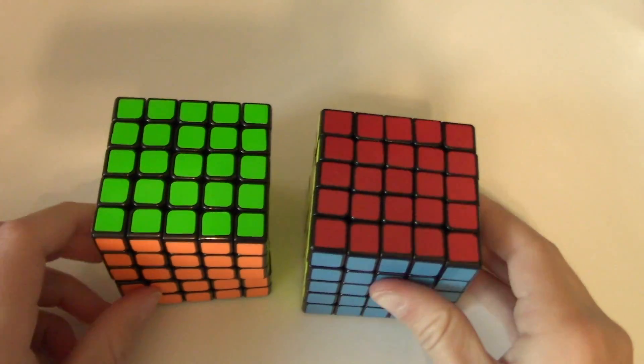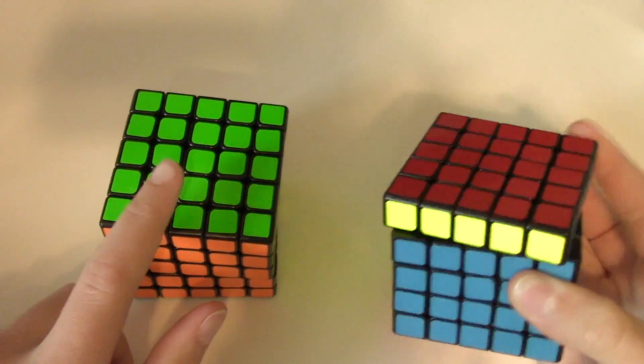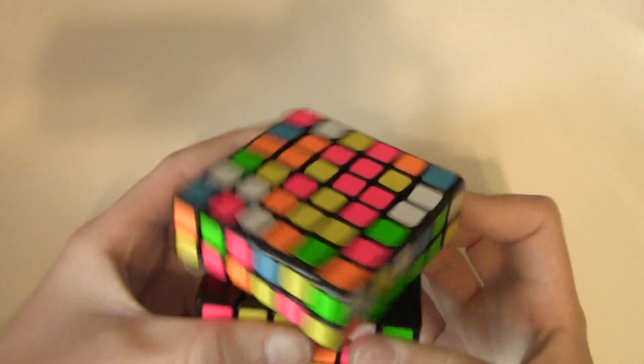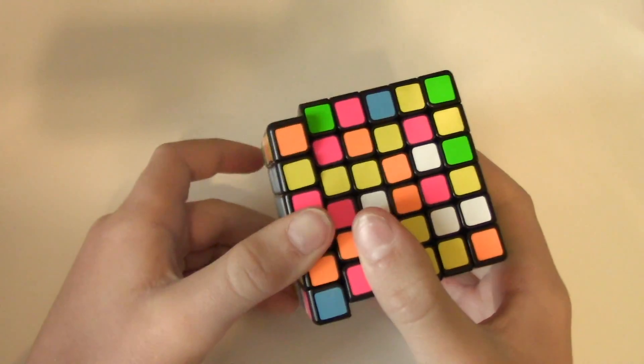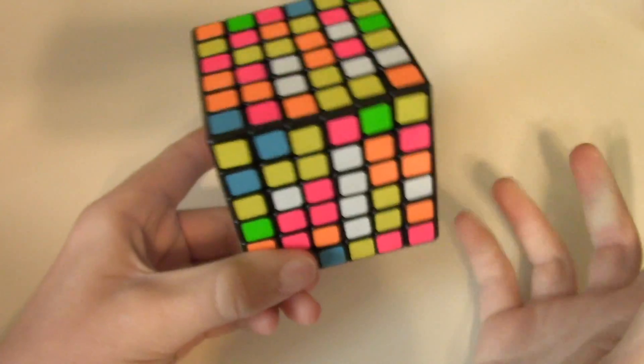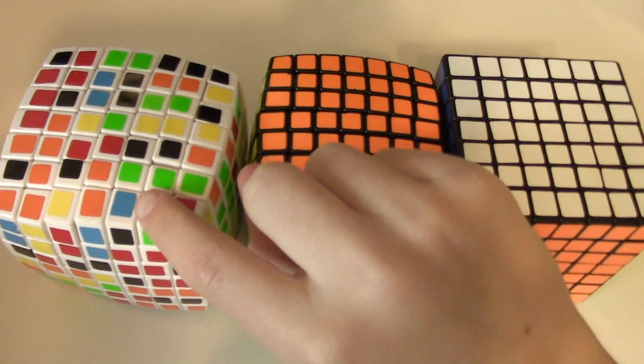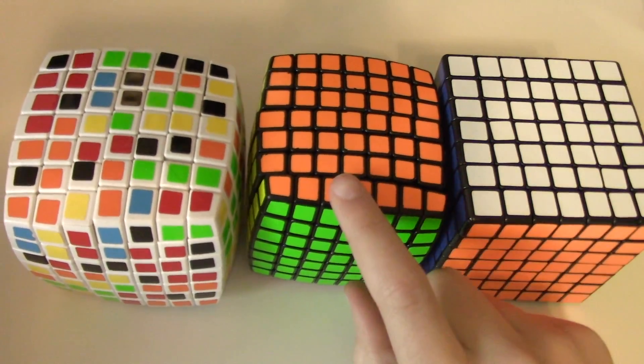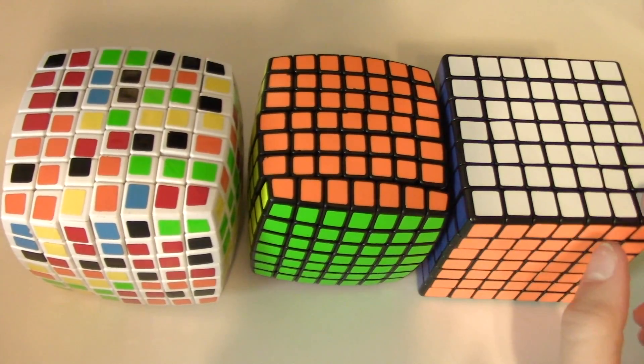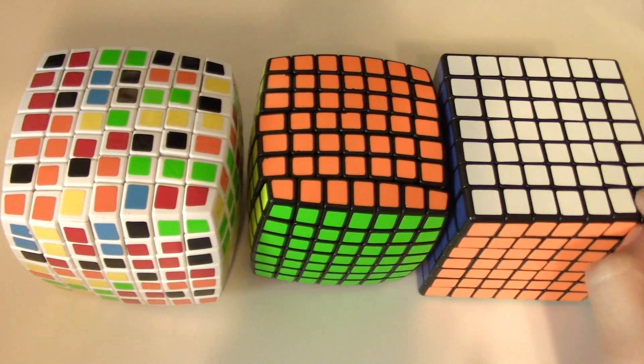Now these are my two 5x5s. That's the Moyu HuaChuang and this is my main Moyu BoChuang. This is my only 6x6 and it's a Moyu Aoshi. It was solved last night but then my neighbors mixed it up. Now these are all my 7x7s. This is a V-Cube 7, my main 7x7 the Moyu pillowed Aofu, and the full size Xing Shou 7x7.